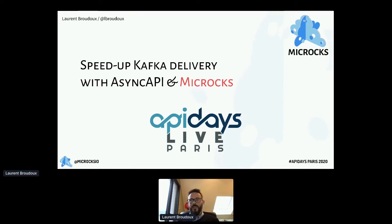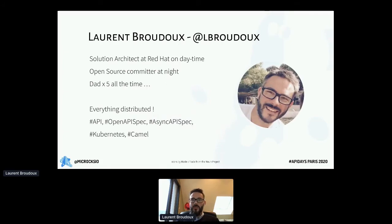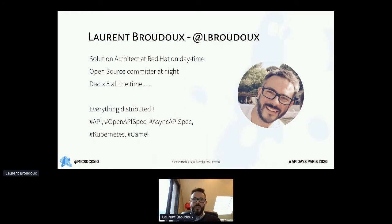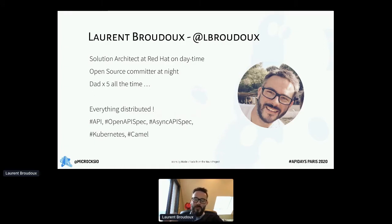But first things first, let me introduce myself. My name is Laurent Brouillet. I am wearing many hats. On daytime, I wear a red one — being a solution architect at Red Hat working on cloud native technologies. At night, I put on my open source contributor suit. Full disclosure, I'm the initiator of the Microcks project. I'm also a happy dad of five, but always thinking about distributed things — API specifications, Kubernetes, and enterprise integration patterns are my favorite topics.